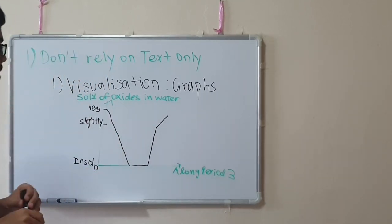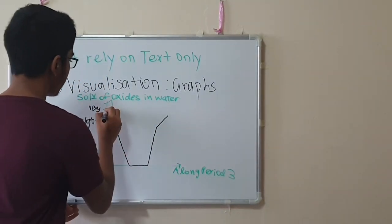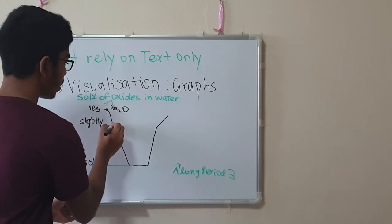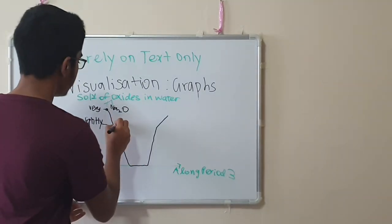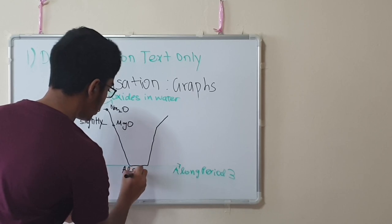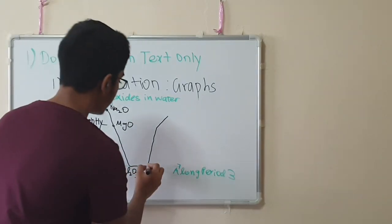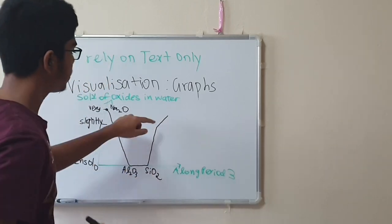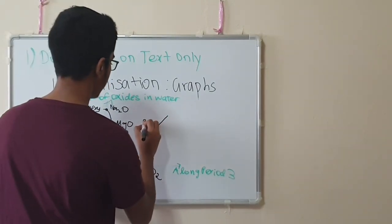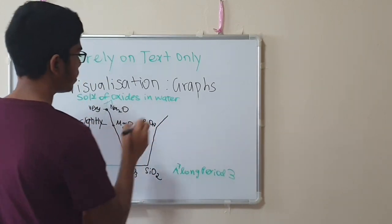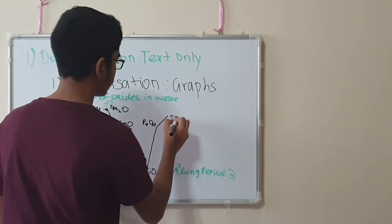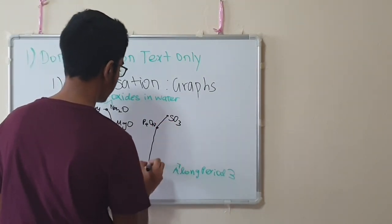All right. It's not a straight line, but you get the hang of it. So this one will be Na2O. This one would be the second element, which is magnesium oxide. This one will be Al2O3. The fourth one will be silicon dioxide. This fifth one will be P4O10, phosphorus pentoxide. And then the last one will be SO3. So you have six elements along period three.